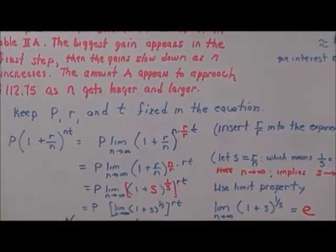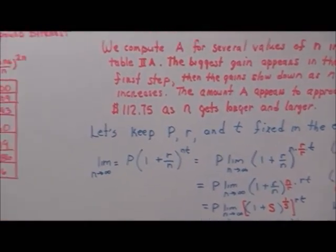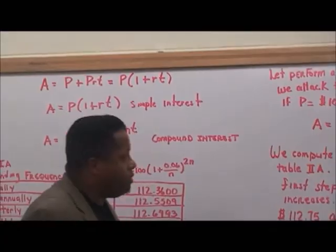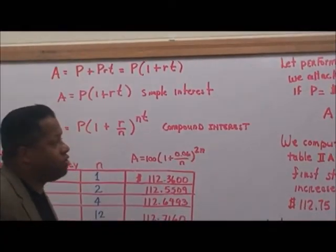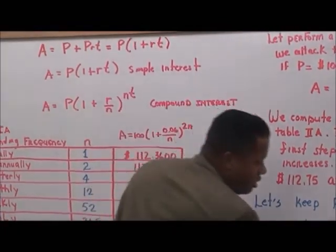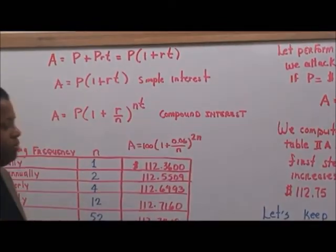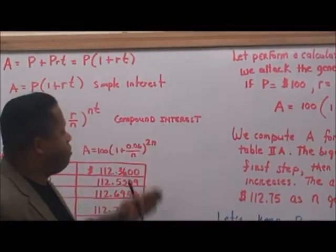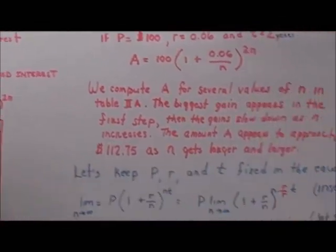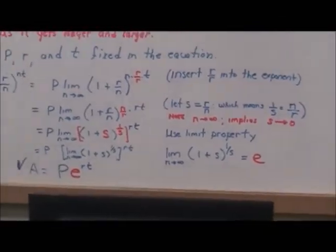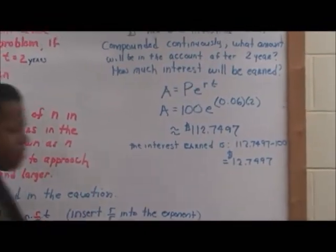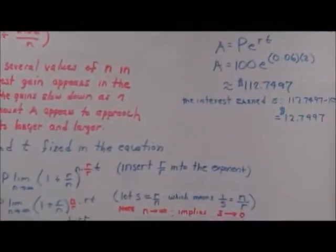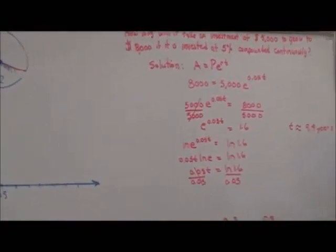It's important to know both formulas: A = P(1 + r/n)^(n·t) for compound interest, and A = P·e^(r·t) for continuously compounded interest. These two formulas are very useful in the business field.